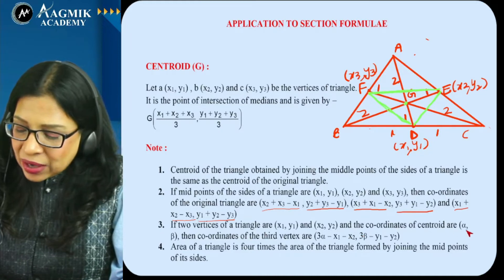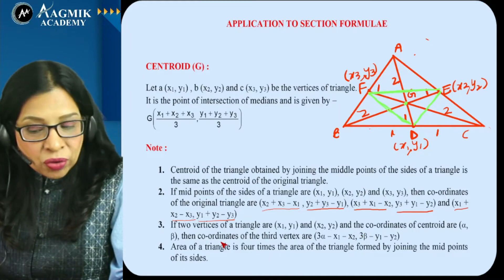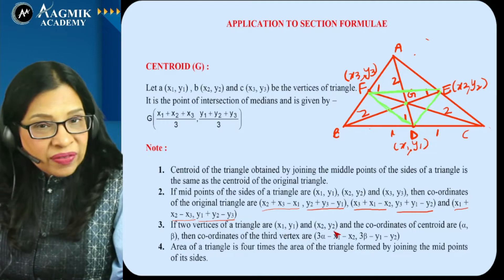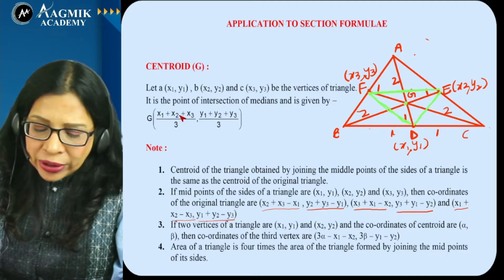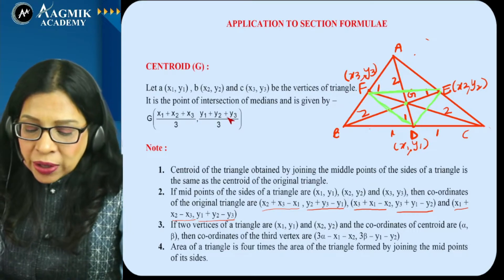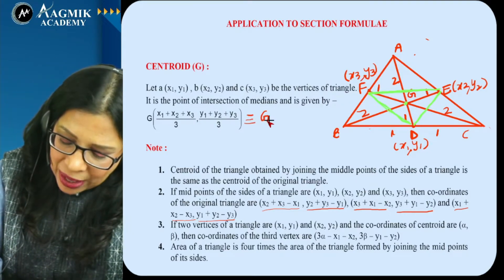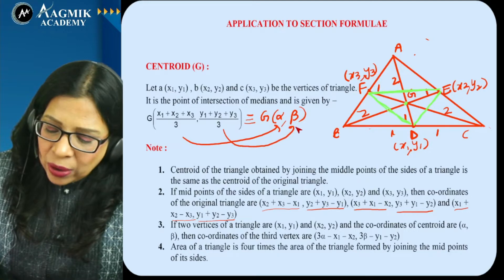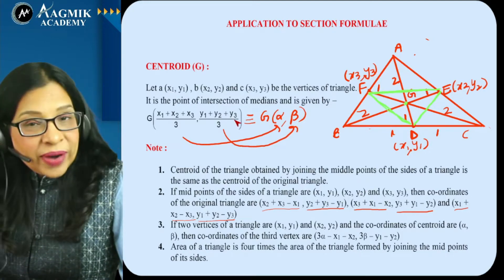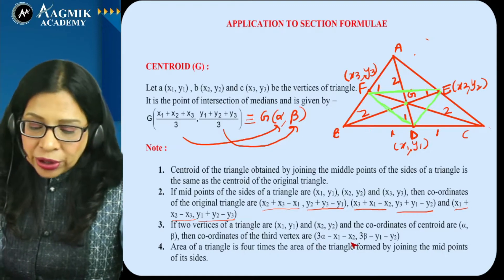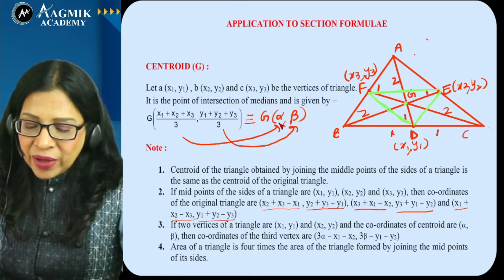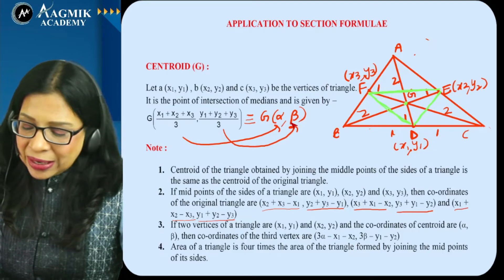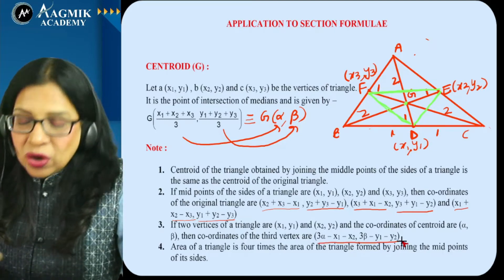If two vertices and centroid (α, β) are given, assume the third vertex as (x3, y3) and equate using the centroid formula. Directly: x3 = 3α − x1 − x2 and y3 = 3β − y1 − y2. Also, the area of triangle ABC is four times the area of the triangle formed by joining its midpoints DEF.